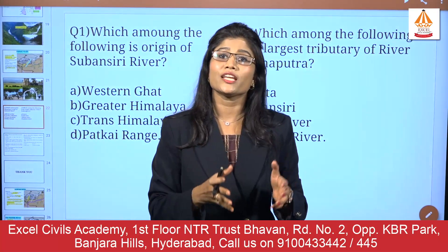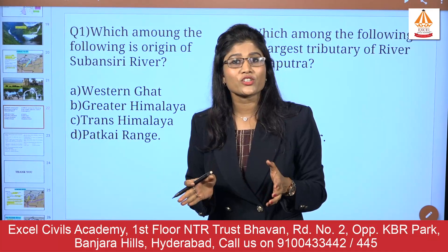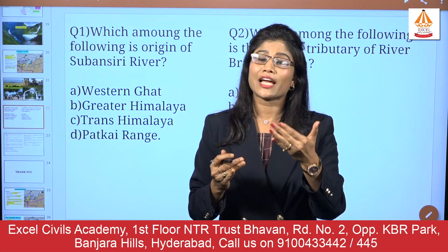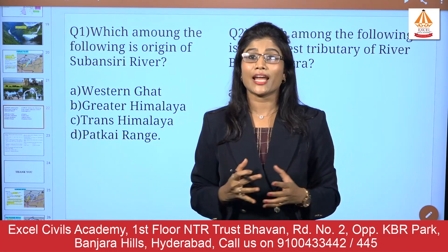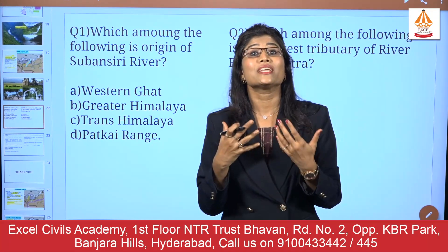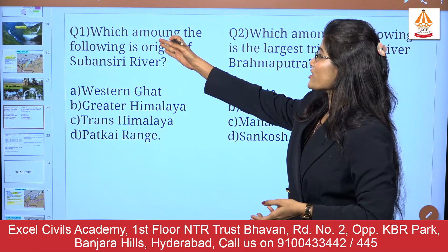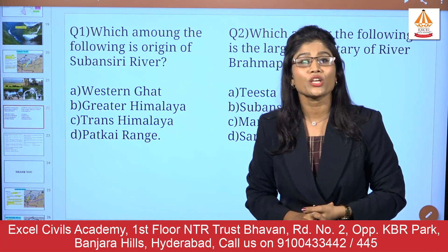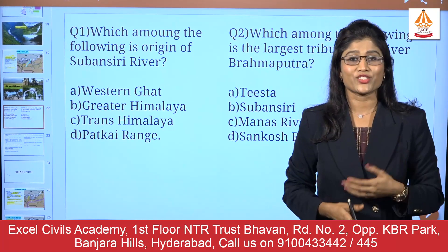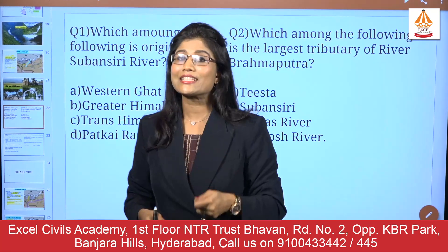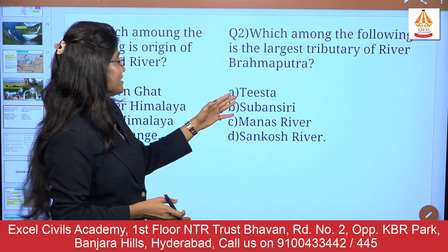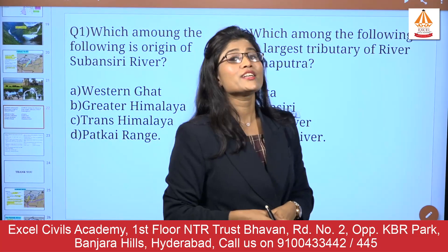Now let's look at some questions based on these three rivers. Please solve these and comment your answers in the comment box below. Question 1: Which among the following is the origin of Subansiri river? Options: (A) Western Ghats, (B) Greater Himalaya, (C) Trans-Himalaya, (D) Patkai Range. Question 2: Which among the following is the largest tributary of river Brahmaputra? Options: Tista, Subansiri, Manas, or Sankosh river.